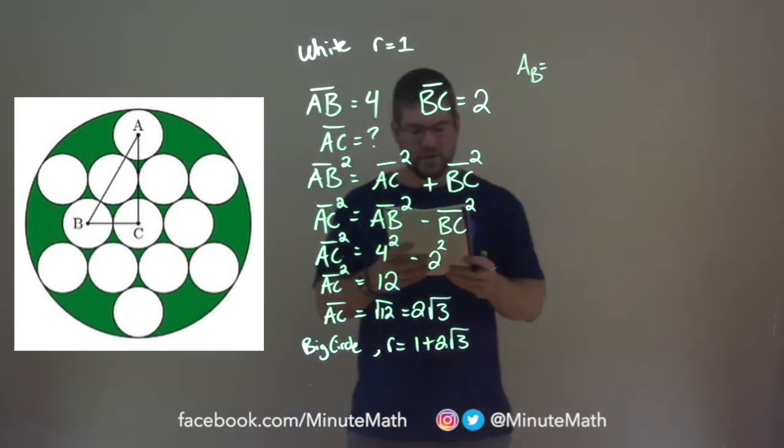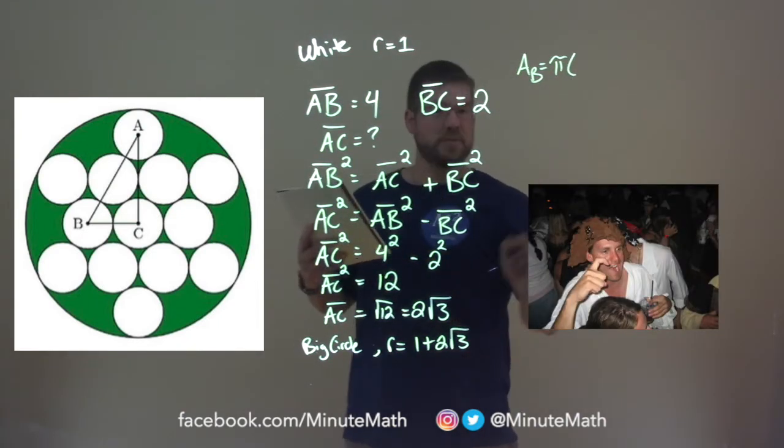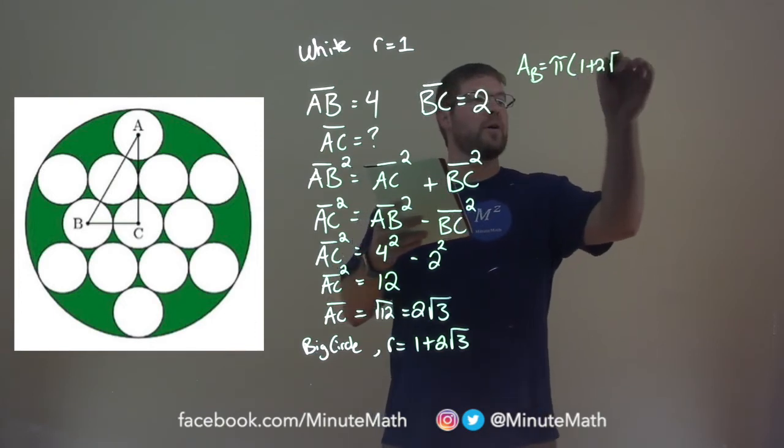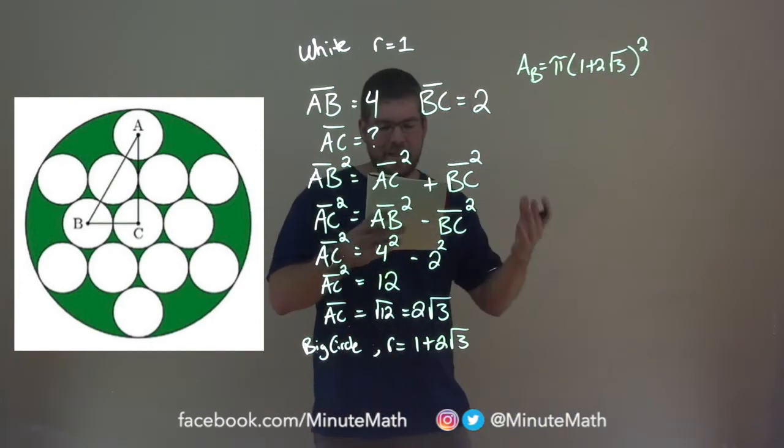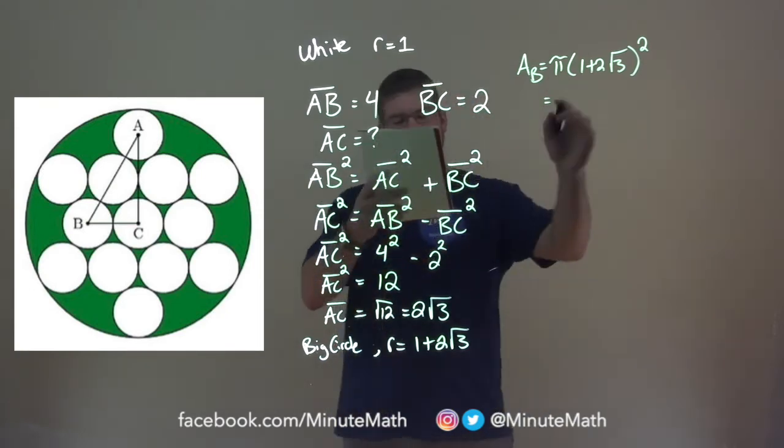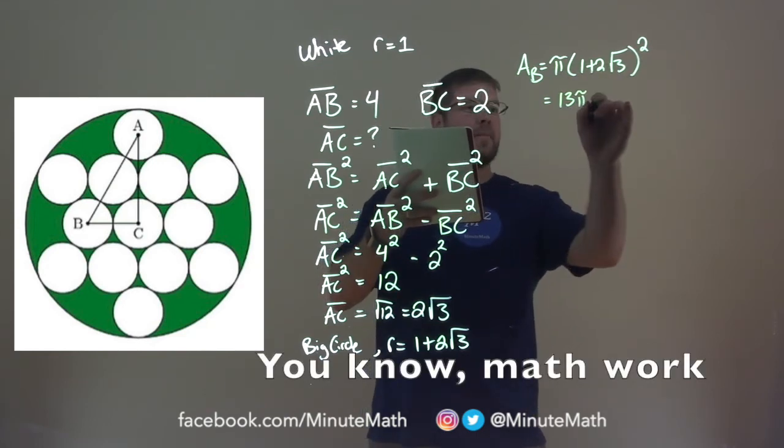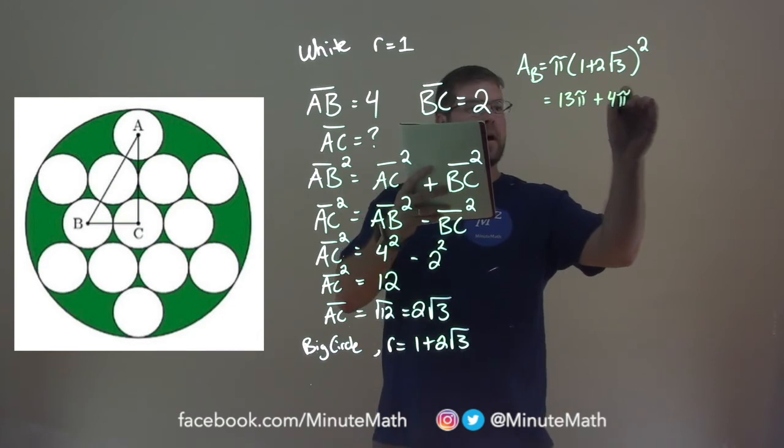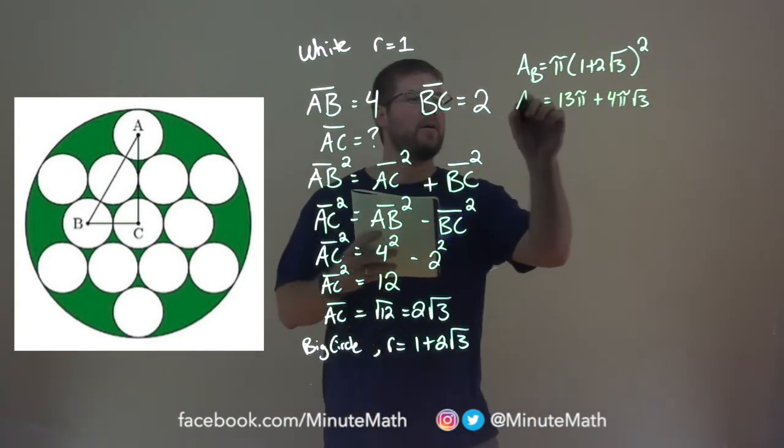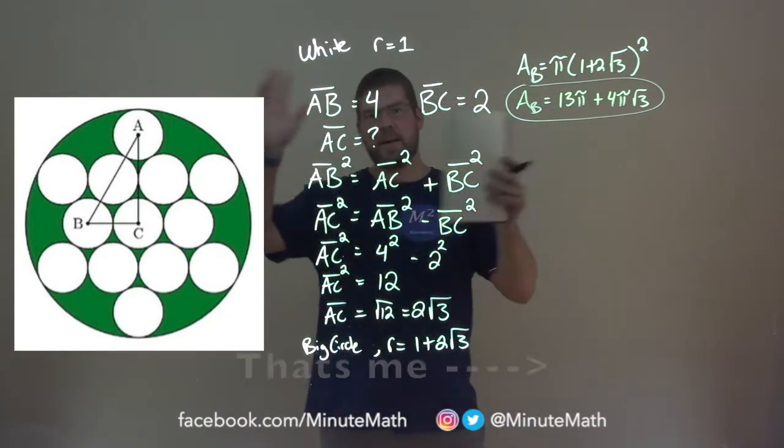Area of the big circle here, what we know is pi r squared, so it's pi times our r value, which we just have here, which is 1 plus 2 square root of 3, all squared. This simplifies, this will simplify to be 13 pi, after you square it and then distribute the pi, plus 4 pi square root of 3. And this area of the big circle is, imagine if the white circles were out, just that big green one, that's a total area.